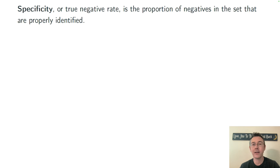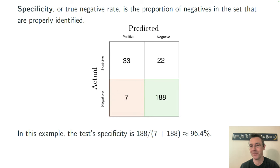Specificity, on the other hand, is the true negative rate, the proportion of negatives in the set that are properly identified. So now I'm just looking at the bottom row of this confusion matrix.